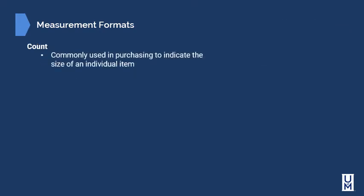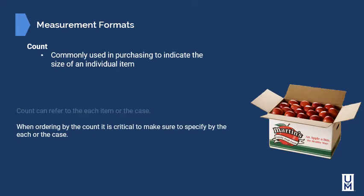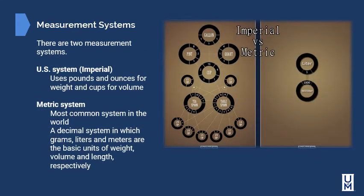Count is commonly used in purchasing to indicate the size of an individual item. Count can refer to the each item or the case. When ordering by the count, it's crucial to specify by the each or by the case. There are two measurement systems: the US system, also referred to as imperial, uses pounds and ounces for weight and cups for volume. The metric system is the most common system in the world — it is a decimal system in which grams, liters, and meters are based on units of weight, volume, and length respectively.